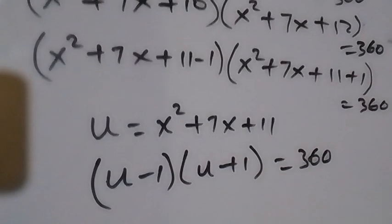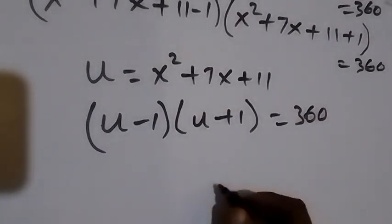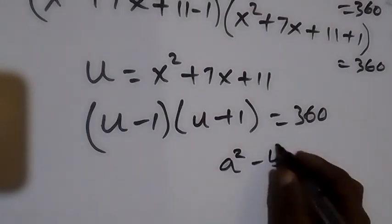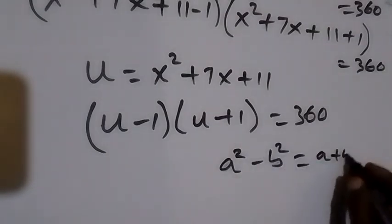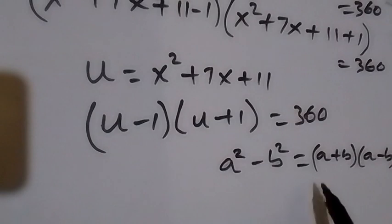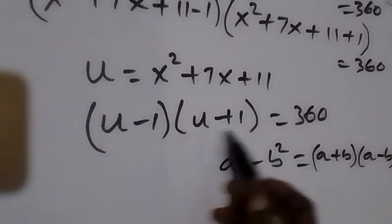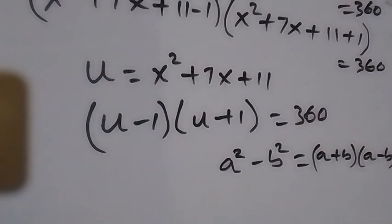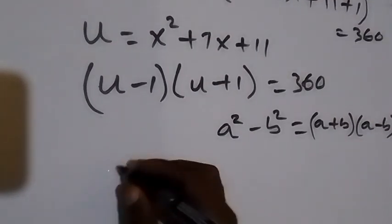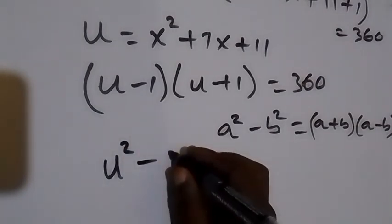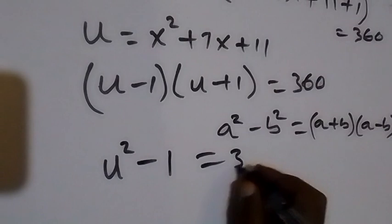This expression is in the form of the difference of two squares identity: a² − b² = (a+b)(a−b). Applying this, the right-hand side becomes u² − 1² = u² − 1, which equals 360.